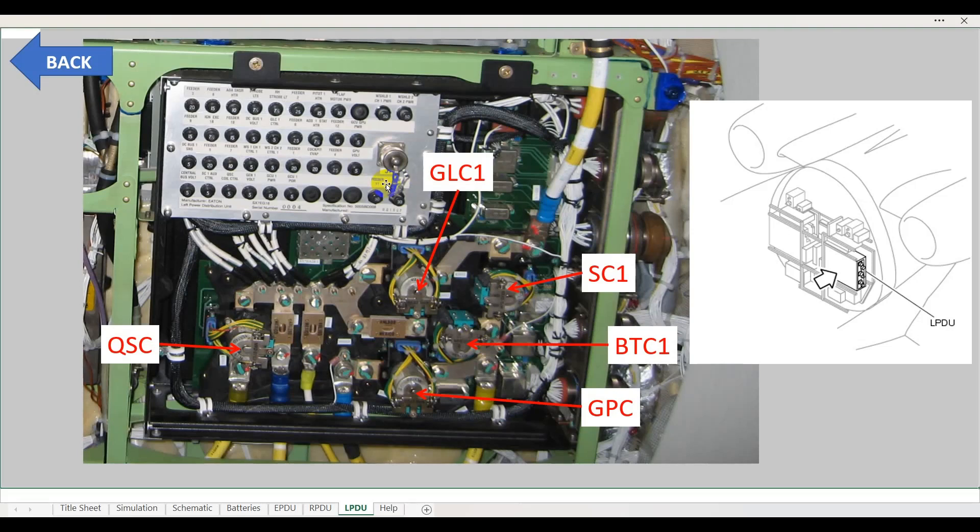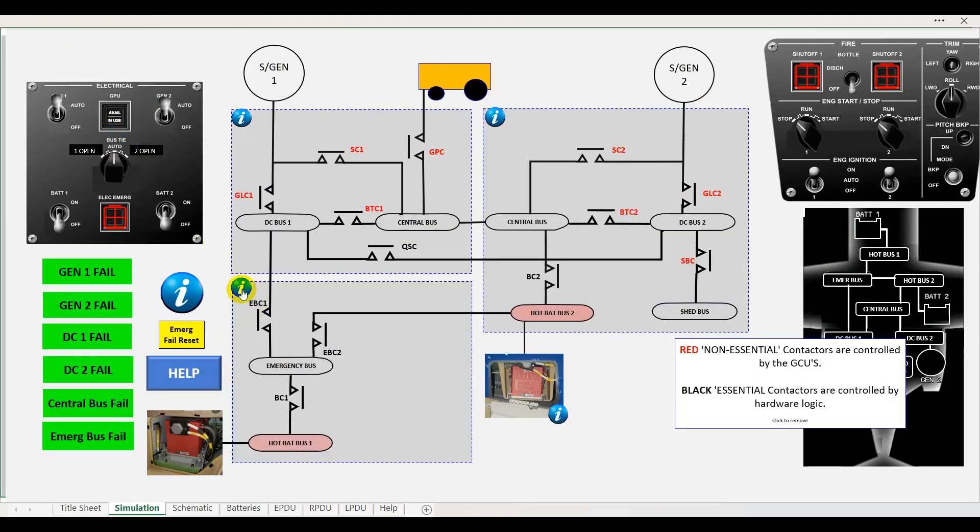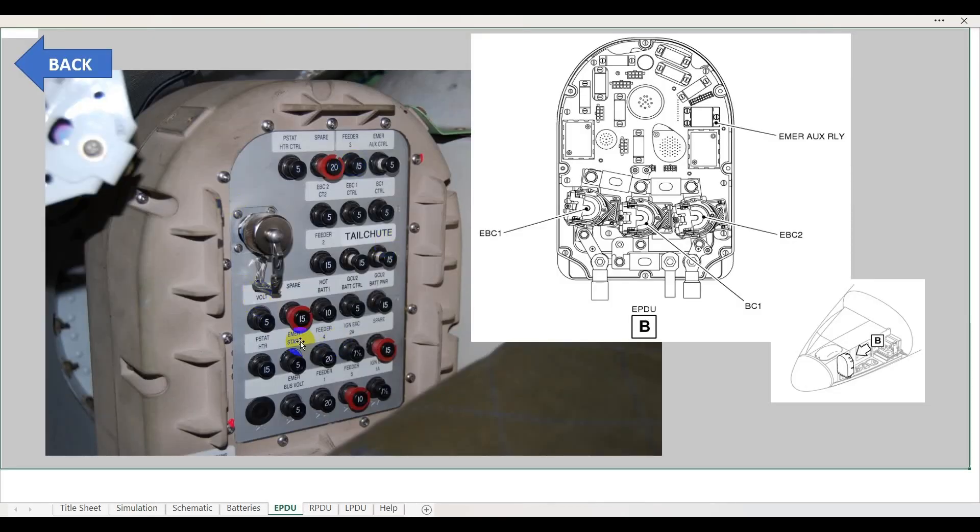It also shows one of the circuit breaker boards that's in the back, and if you click on this one here, it shows you the emergency power distribution box. This is from the Embraer prototype model, which is why you can see circuit breakers for tail chutes, which isn't standard fit.